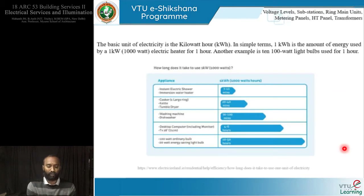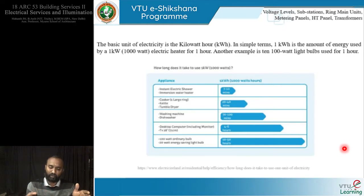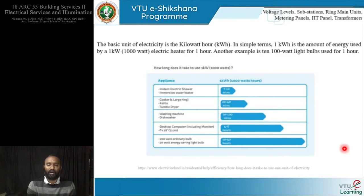With this flow chart in mind, we will slowly move to the technical aspect in terms of power and wattage that appliances are going to consume. The basic unit of electricity is the kilowatt hour. One kilowatt hour is the amount of energy used by a one kilowatt — that is 1000 watts — electric heater for one hour. Another example: 10 one-hundred-watt light bulbs used for one hour. The usage has to amount to one kilowatt and run for one hour.